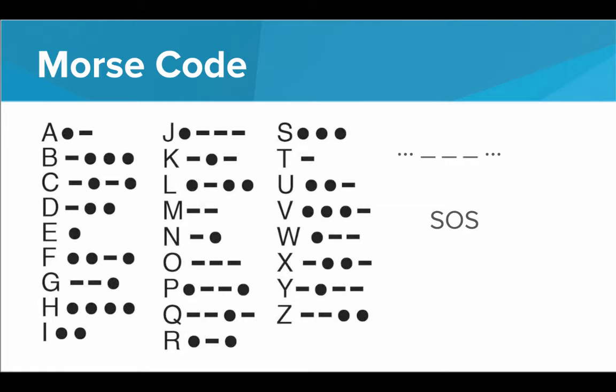We also have Morse code. This is a great example of code. So this is a system that we use for a long time and we still use to send information over long distances using just sound or light. So a short signal, a beep, that's a dot, and a long signal, a beep, that's a dash. And we can encode the entire alphabet using just beeps and dashes, dots and dashes. So for example, SOS is three dots, three dashes, and then three dots.